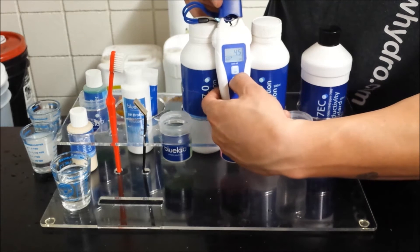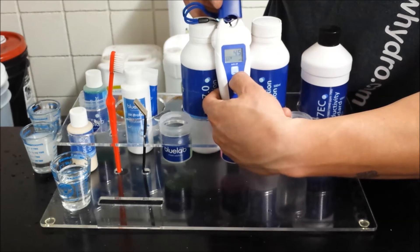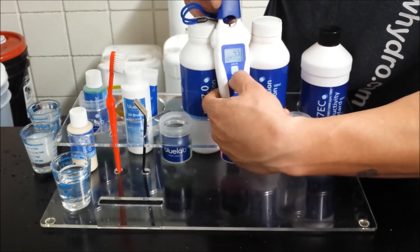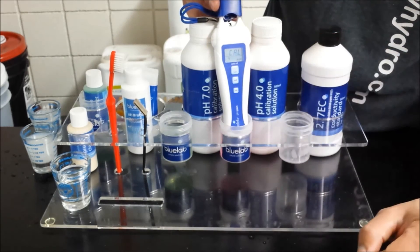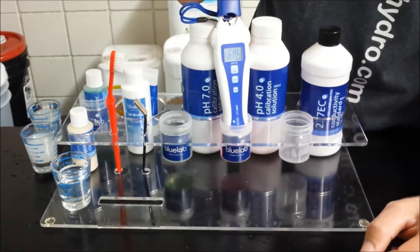Once it settles, go ahead and hold down the cal button until it says cal. Then it'll lock on 4 and also give you a checkmark in the corner, letting you know your Bluelab is calibrated.